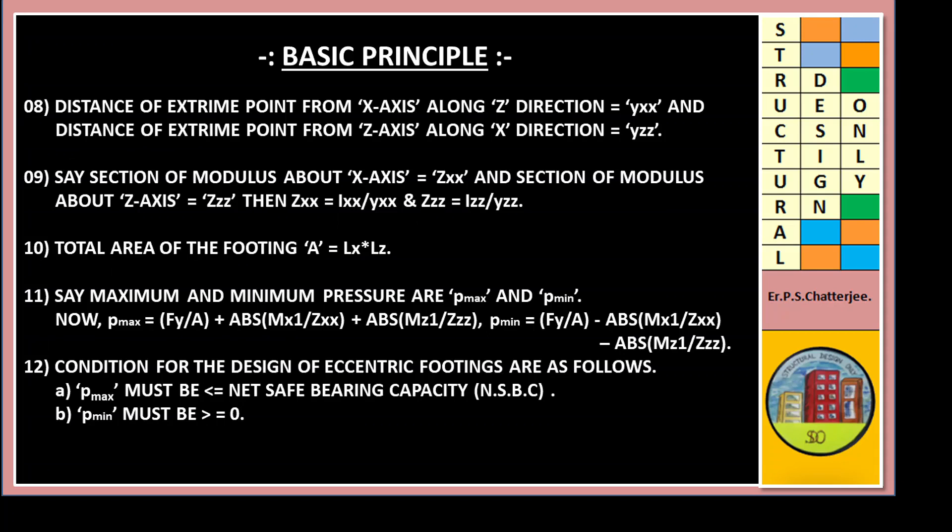Say maximum and minimum pressure are P-max and P-min. Now P-max equals FY by A plus absolute MX1 divided by ZXX plus absolute MZ1 by ZZZ. And P-min equals FY by A minus absolute MX1 divided by ZXX minus absolute MZ1 divided by ZZZ.